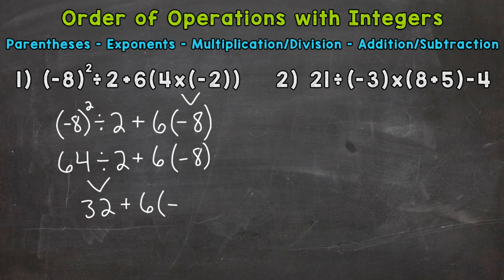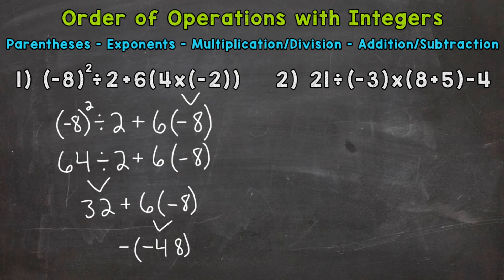Any multiplication or division? Yes, we have 6 times negative 8. A positive 6 times a negative 8 is going to give us a negative answer — so negative 48. Bring down the addition sign and the 32. We wrap things up with 32 plus negative 48, which gives us negative 16 for our final answer.